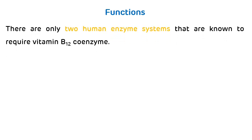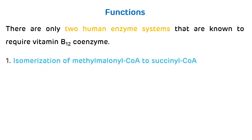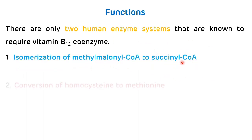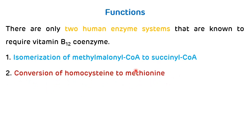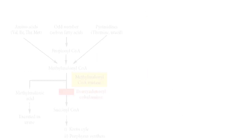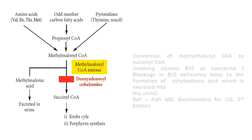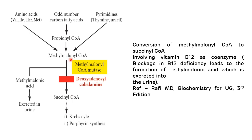Now biochemical functions of vitamin B12. There are only two human enzyme systems known to require vitamin B12 as a coenzyme. First is isomerization of methylmalonyl-CoA to succinyl-CoA, and second is conversion of homocysteine to methionine. Methylmalonyl-CoA is synthesized as the end product of metabolism of various odd-number carbon fatty acids, amino acids, and pyrimidines. This methylmalonyl-CoA is isomerized to succinyl-CoA, which enters the TCA cycle and is required for the synthesis of porphyrin.